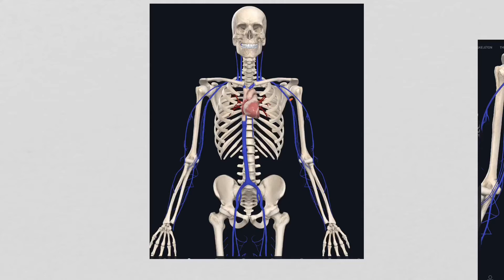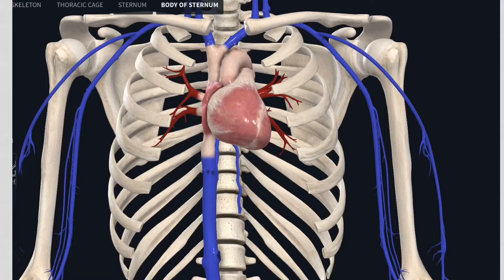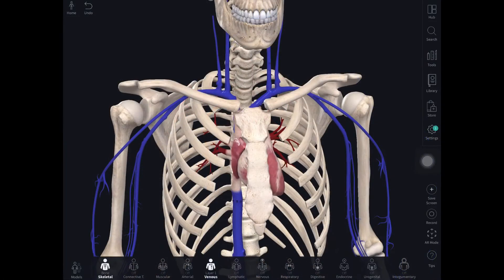To perform an ablation for atrial fibrillation through a keyhole approach, we look at the human skeleton where the heart sits in the thorax. The access point through which we put catheters into the heart is from the groin, through the femoral veins. We insert little tubes that make their way through the femoral vein into the inferior vena cava and into the heart. The catheters can then be positioned in the appropriate place to start treatment.